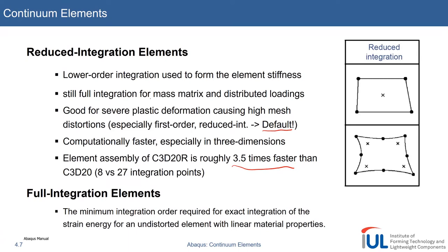Back in the day, they sometimes used lower order integration for mass and loadings as well, but found out that this was not a good idea, so they switched back and use reduced integration only for the element stiffness. In general, it is completely faster, and the higher the dimension you go, the more you save.